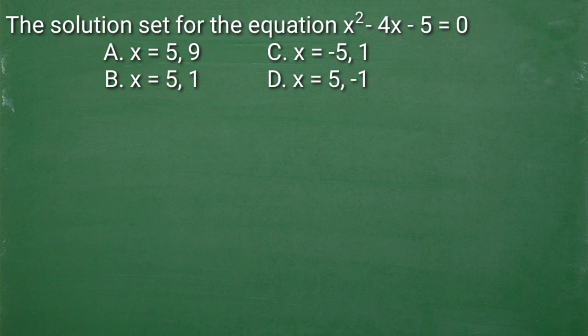The solution set for the equation x squared minus 4x minus 5 is equal to 0. A. X is equal to positive 5, positive 9. B. X is equal to positive 5, positive 1. C. X is equal to negative 5, positive 1. D. X is equal to positive 5, negative 1.